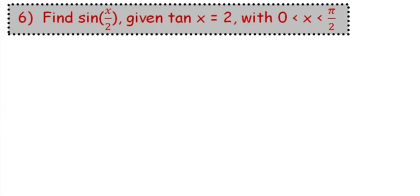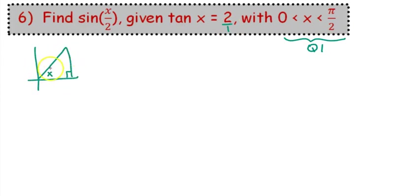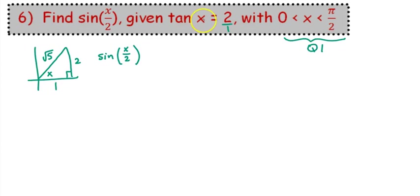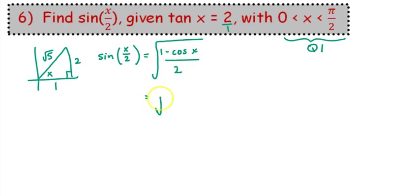Find the sine of x over 2, given that the tangent of x is 2 and x is between 0 and pi over 2 radians, so x is in quadrant 1. If the tangent of x is 2, we can make that the ratio 2 over 1 and draw a reference triangle for angle x in quadrant 1. Tangent is opposite over adjacent, so 2 on the opposite and 1 on the adjacent. Using the Pythagorean theorem, we get square root 5 for the hypotenuse. Since x is in quadrant 1, half of it is also in quadrant 1, and sine is positive there, so we need the plus sign in front of the radical. We have the square root of 1 minus cosine of x over 2, and the cosine of x is 1 over square root 5, which we'll write as square root 5 over 5.